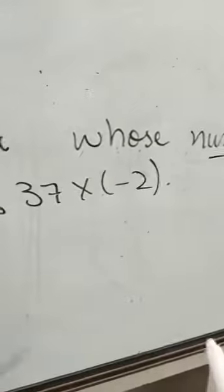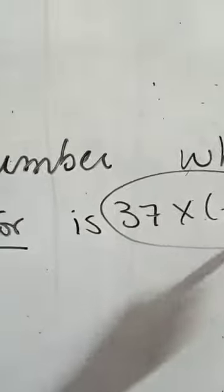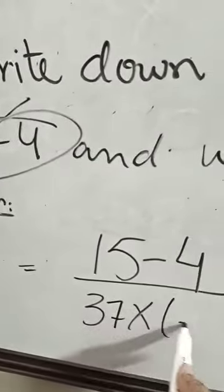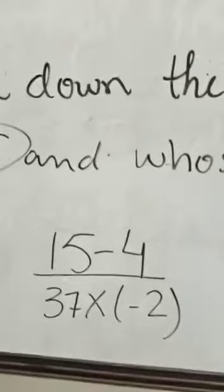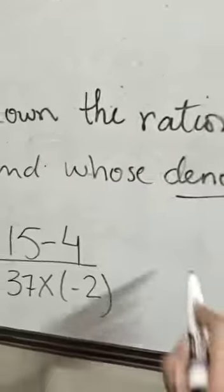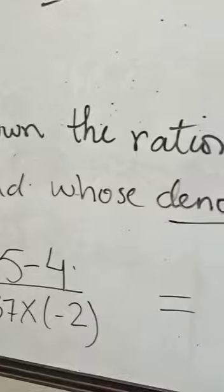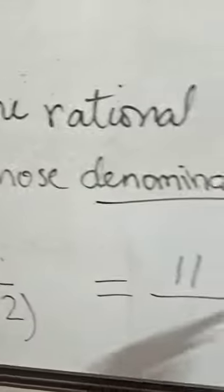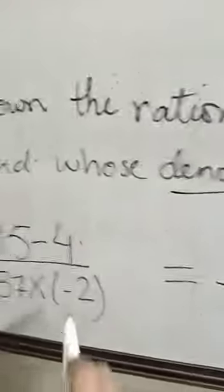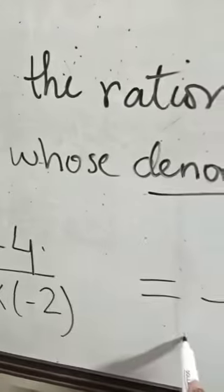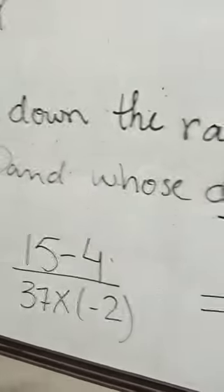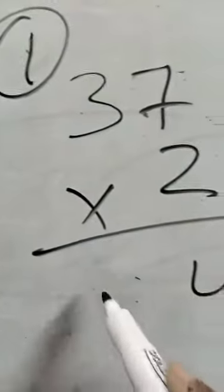You will have a fraction you will have to solve. 15 minus 4 divided by 37 multiply minus 2, and minus plus minus. If you multiply it, 37 times 2 is 74.